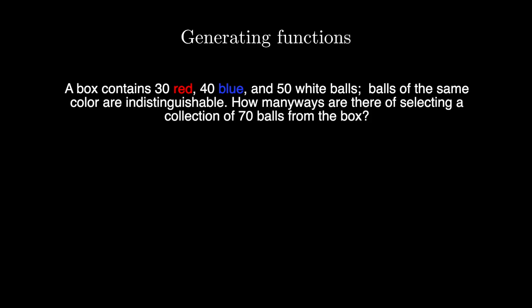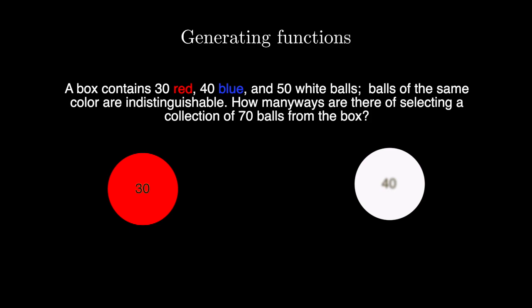A box contains 30 red, 40 blue, and 50 white balls. Balls of the same color are indistinguishable. How many ways are there of selecting a collection of 70 balls from the box? For example, we can take 30 red balls and 40 white balls, but there are many other options.